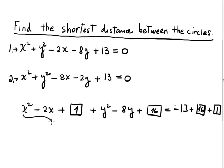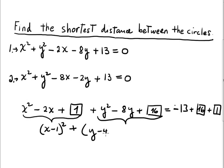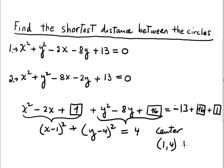The factorization is x minus 1 squared, plus y minus 4 squared, equals negative 13 plus 16 plus 1, which is 4. The conclusion is: center is located at the point (1, 4).